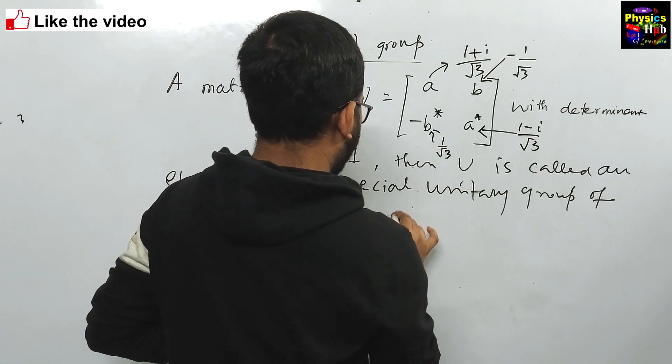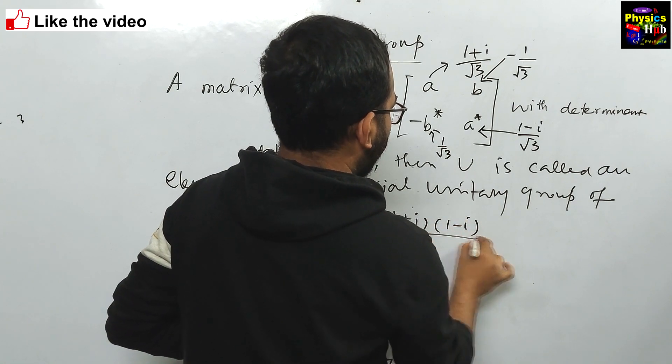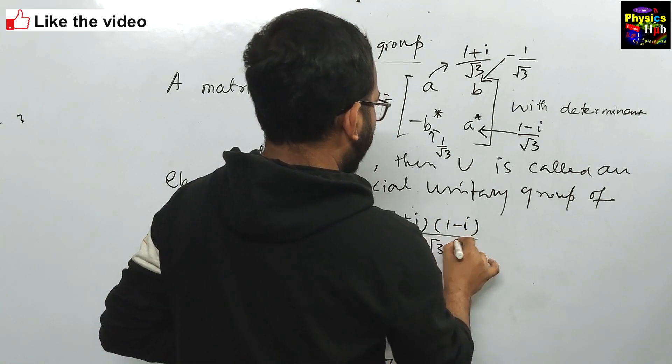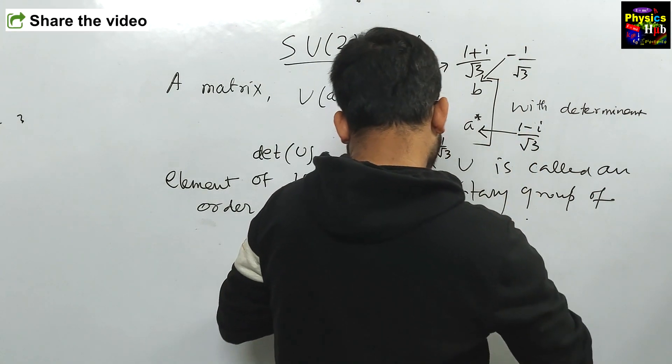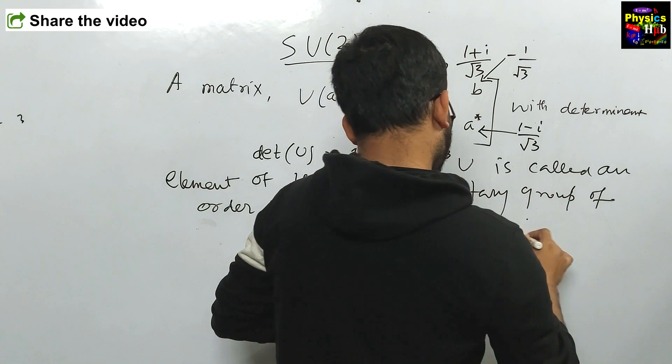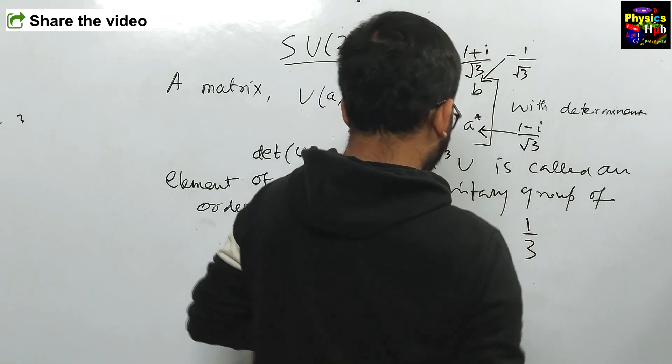So 1 plus i into 1 minus i upon root 3 square minus this 1 by 3. 1 by 3 and another minus is there, so it becomes plus.